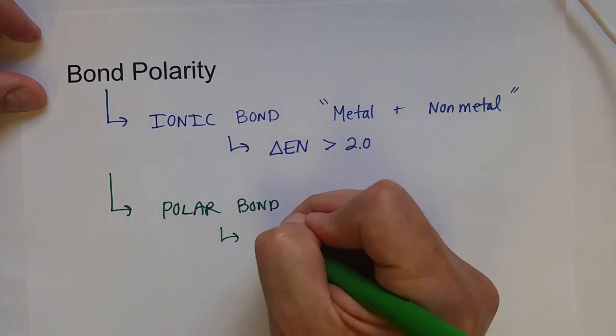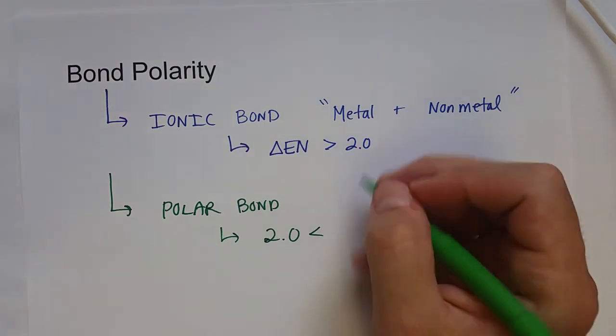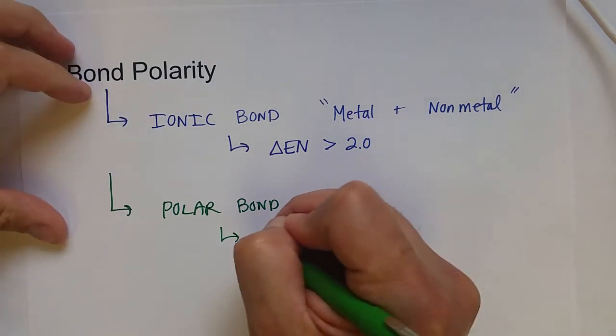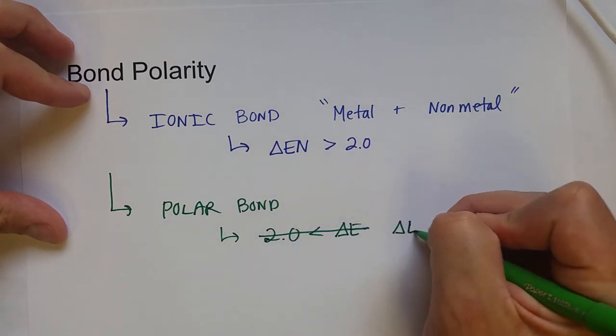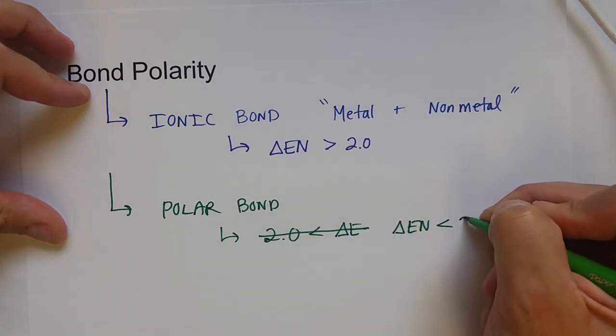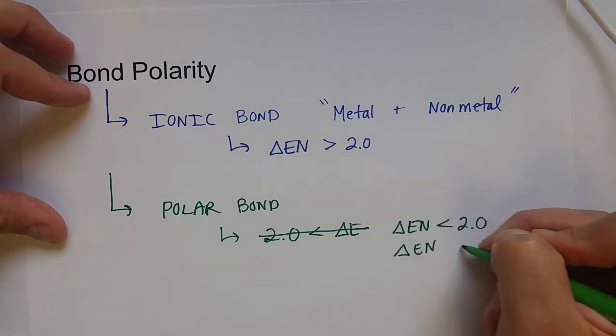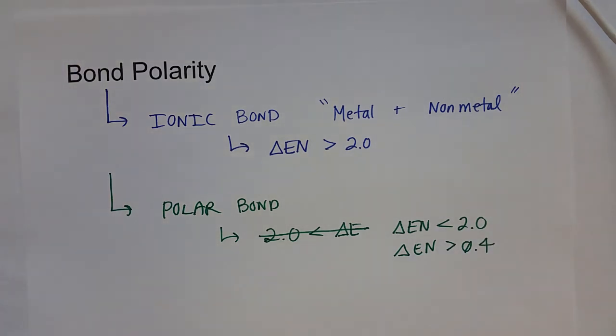And this is when the difference in electronegative value is less than 2.0, but greater than 0.4. Those are just the general guidelines.